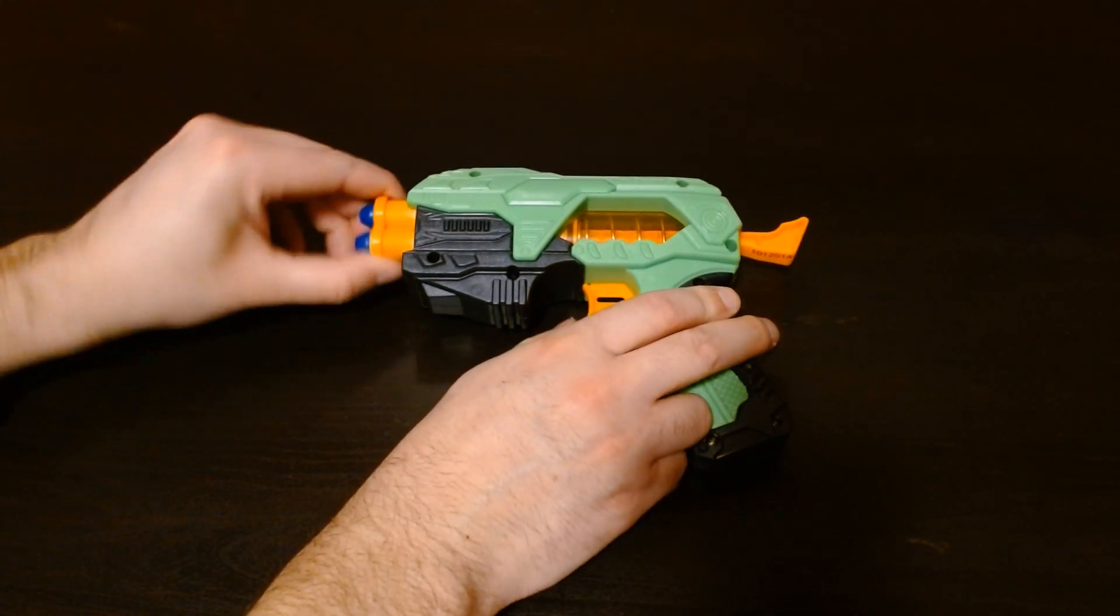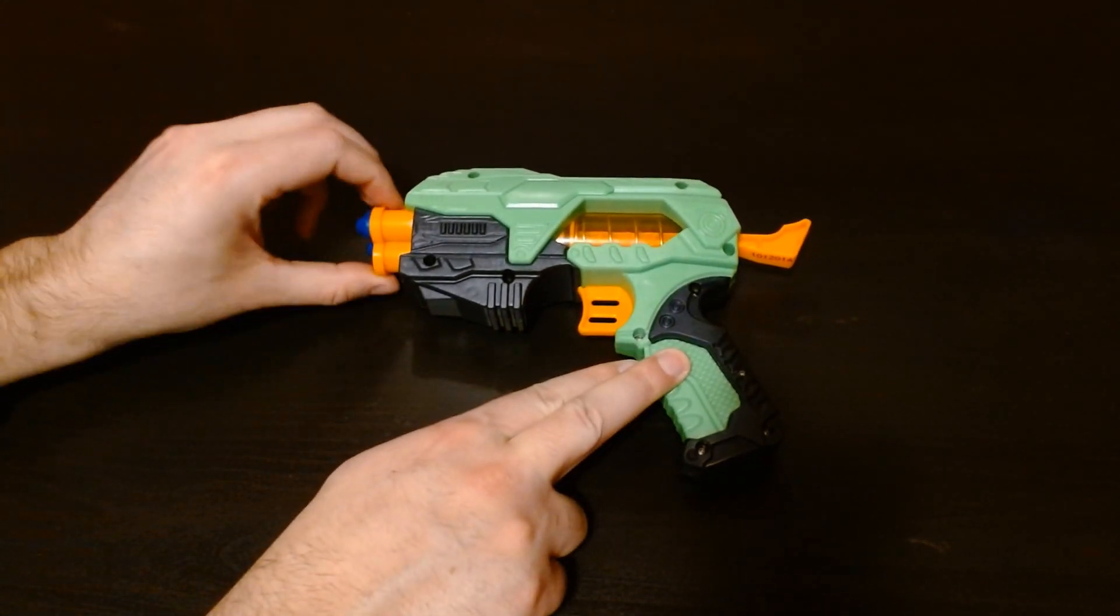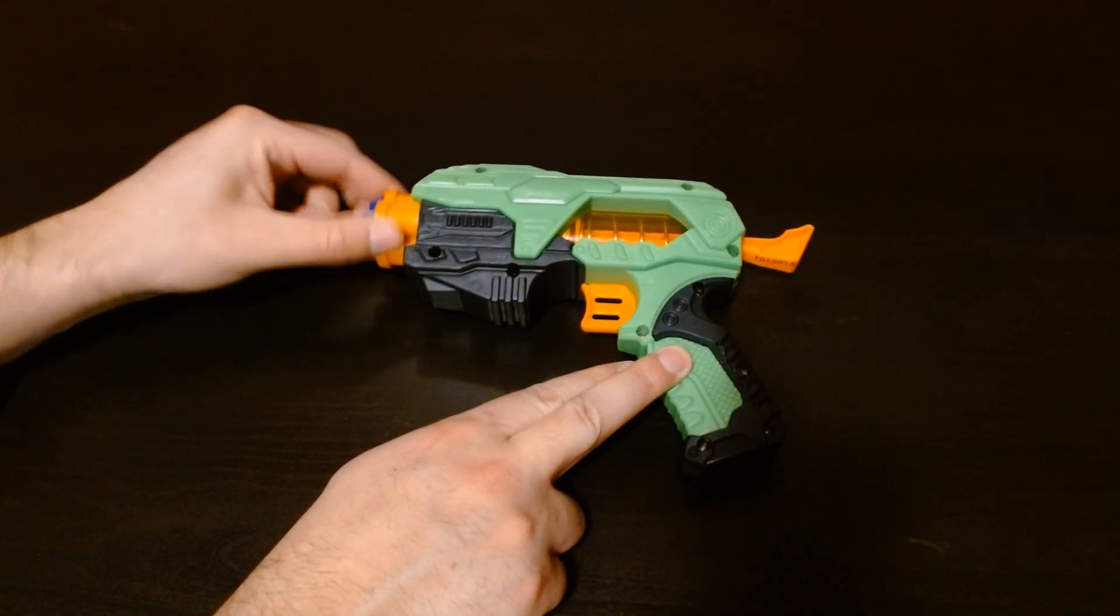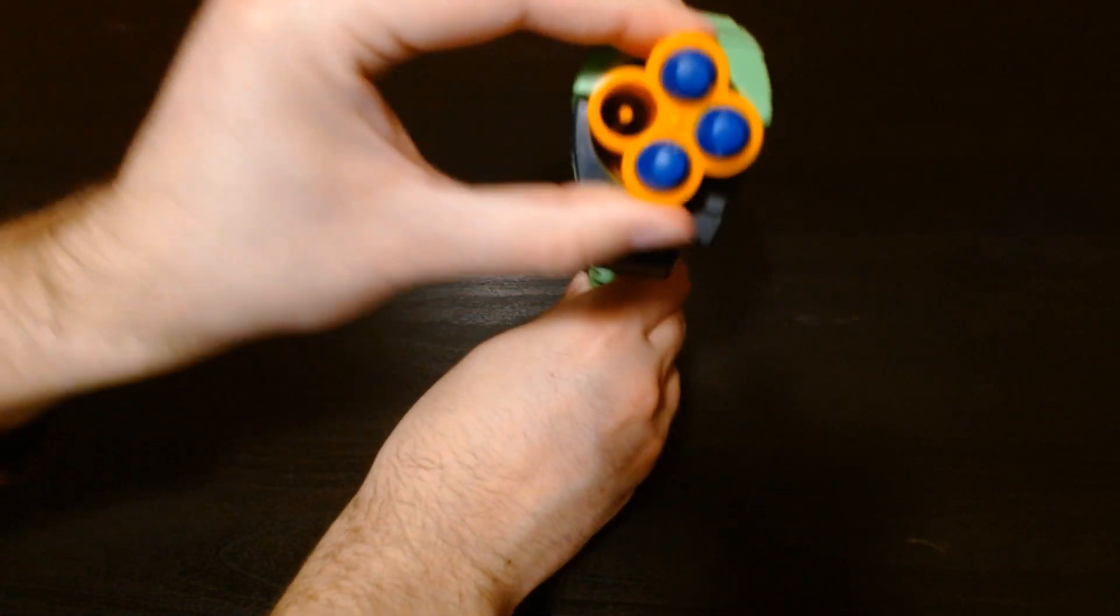So first, let's see what we can see from the outside of this device. We have a revolving magazine that, when positioned correctly, allows for the dart on top to be fired.